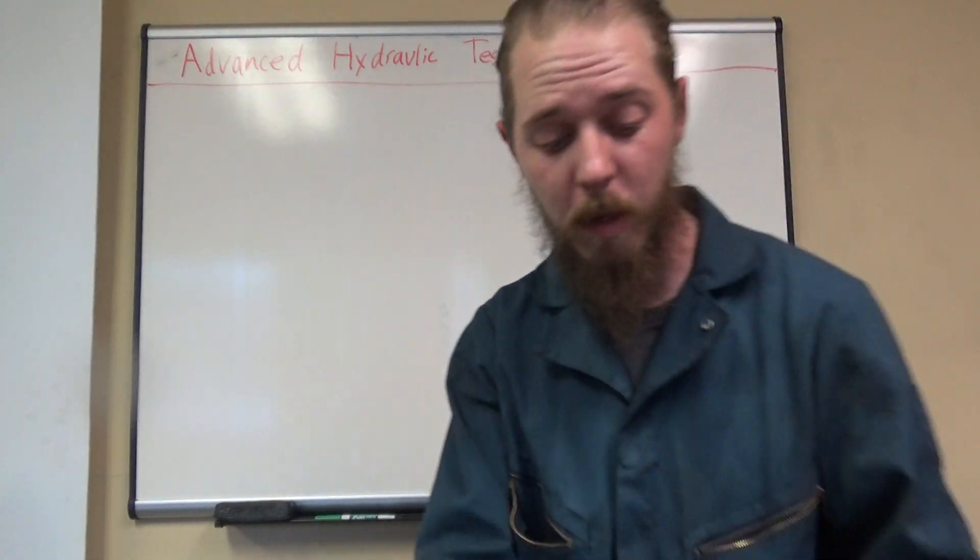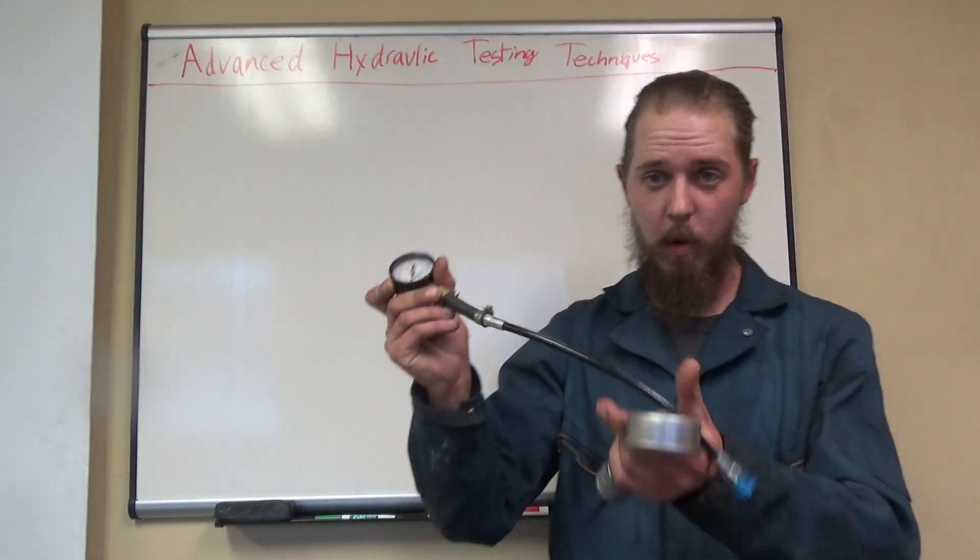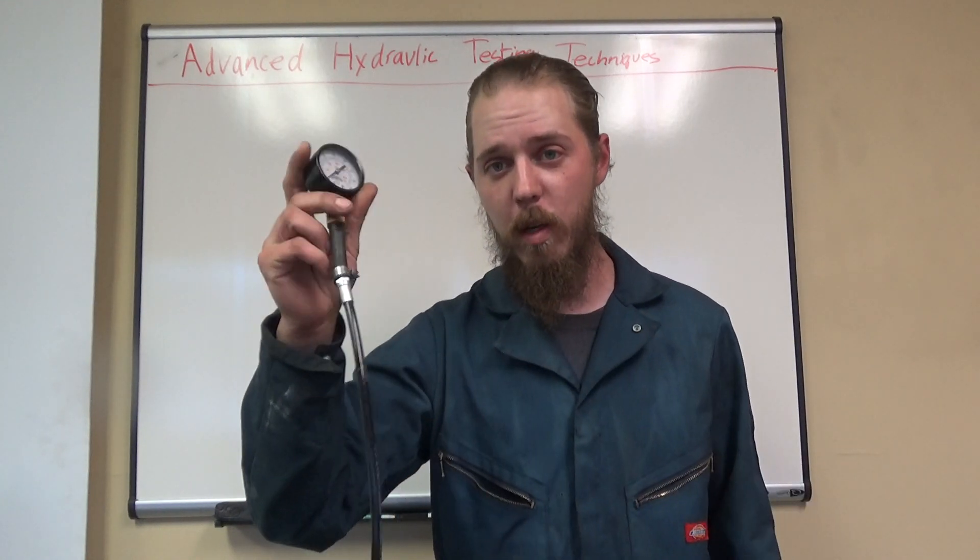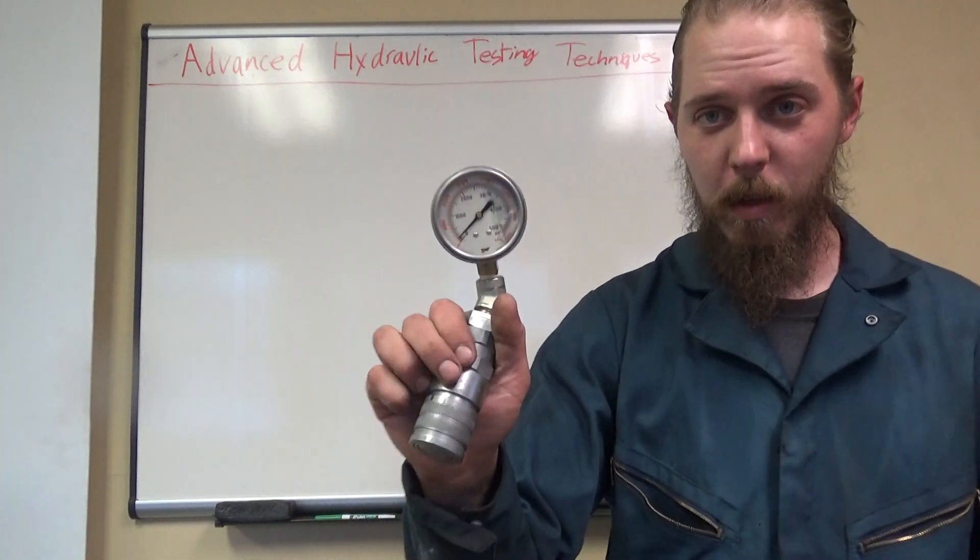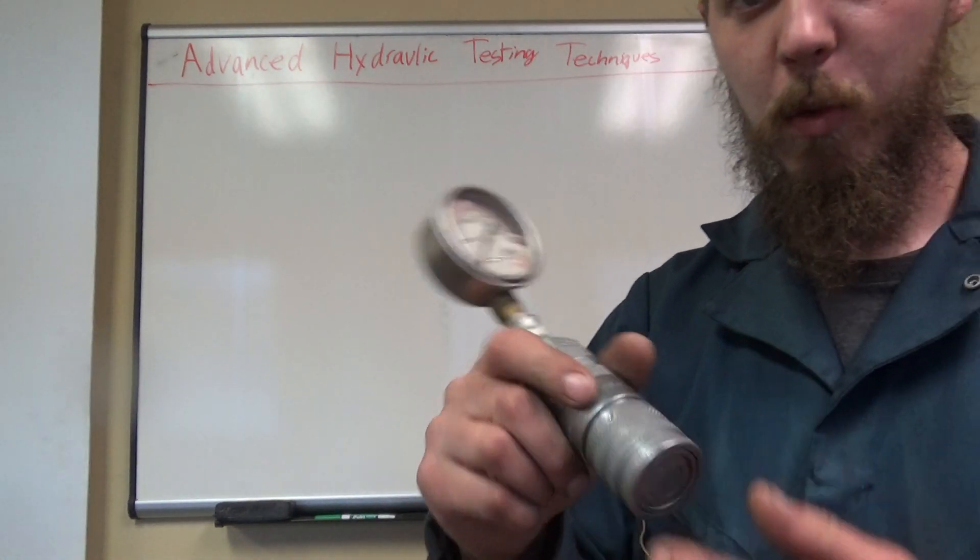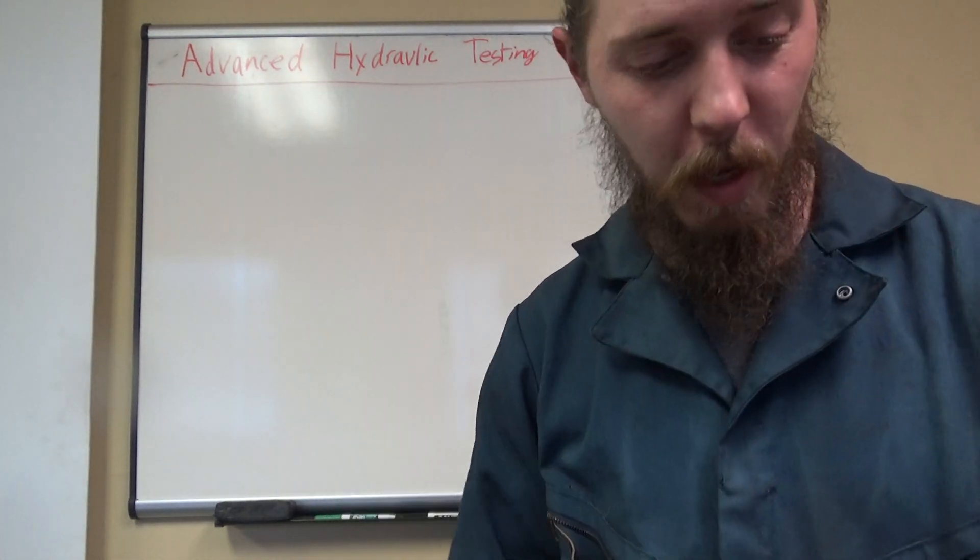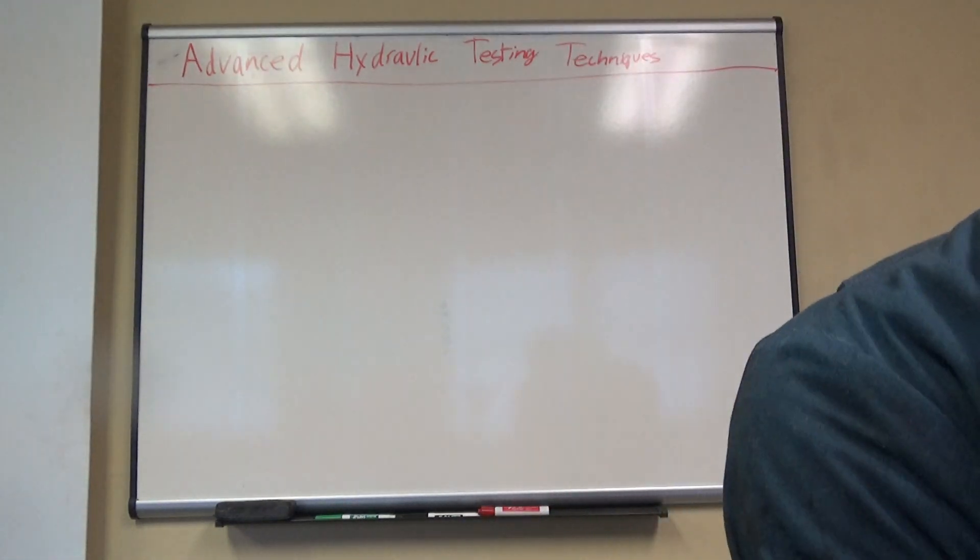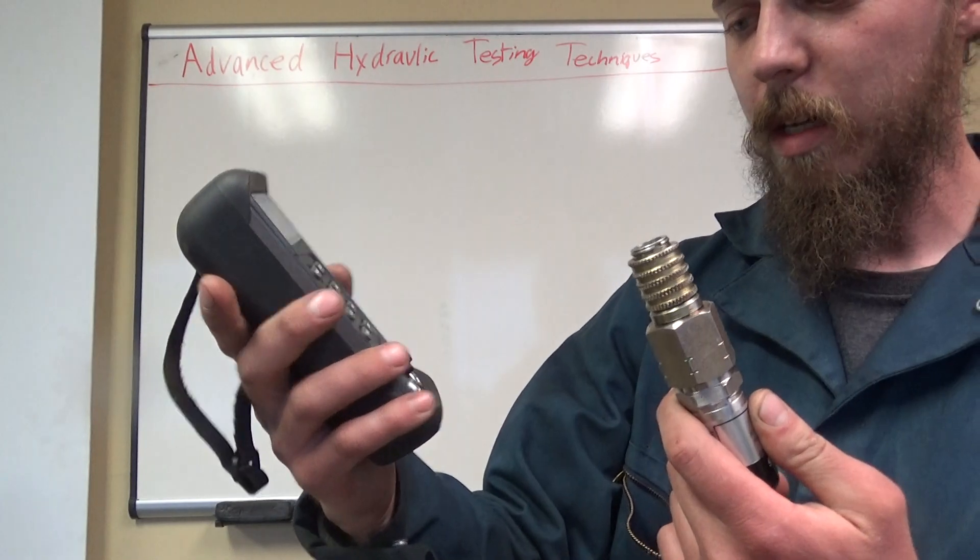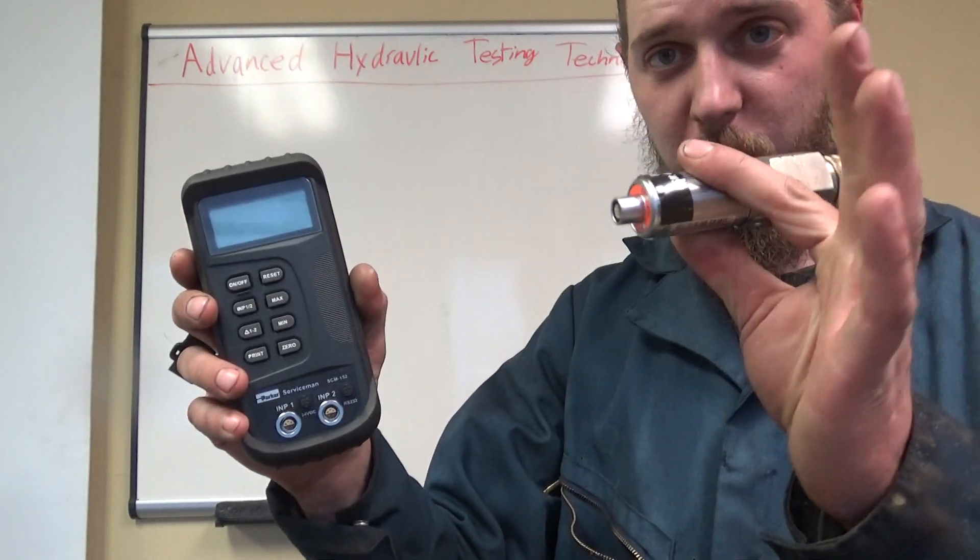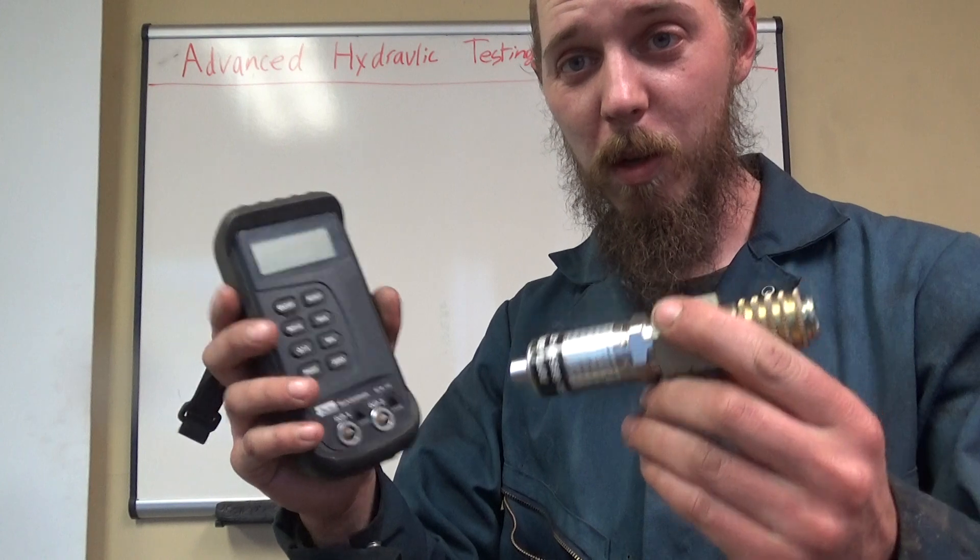And gauge-wise, you've got old-school cobbled together for a case drain, which is low pressure. You've got larger analog gauges here, quick coupler, system pressure deadhead, that's fine. You even have up to the modern day, the Parker digital gauges, pressure transducers. It's a start.